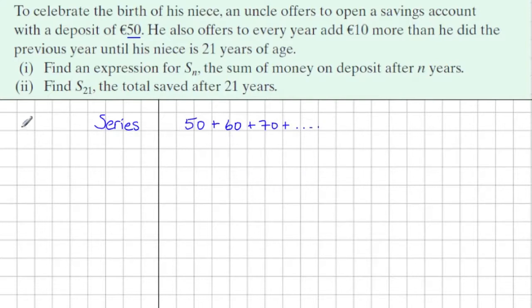Because we're adding on 10 euros more each time, this is an arithmetic series. In this series we can see that the first term A is 50 euros and the common difference is 10 euros. We'll just write 10 for the moment.